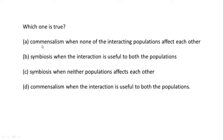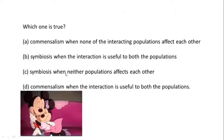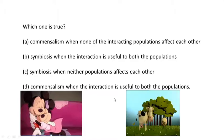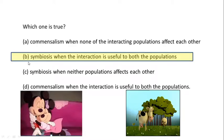Which one is true? Option A — commensalism when none of the interacting populations affect each other — is not correct, since in commensalism one species is benefited (like the dung beetle) while the other is unaffected. Option B — symbiosis when the interaction is useful to both populations — is correct. Option C — symbiosis when neither population affects each other — is incorrect, as both populations affect each other positively in symbiosis. Option D — commensalism when interaction is useful to both populations — is also incorrect, since in commensalism only one species gets benefit. Therefore, the correct answer is option B.